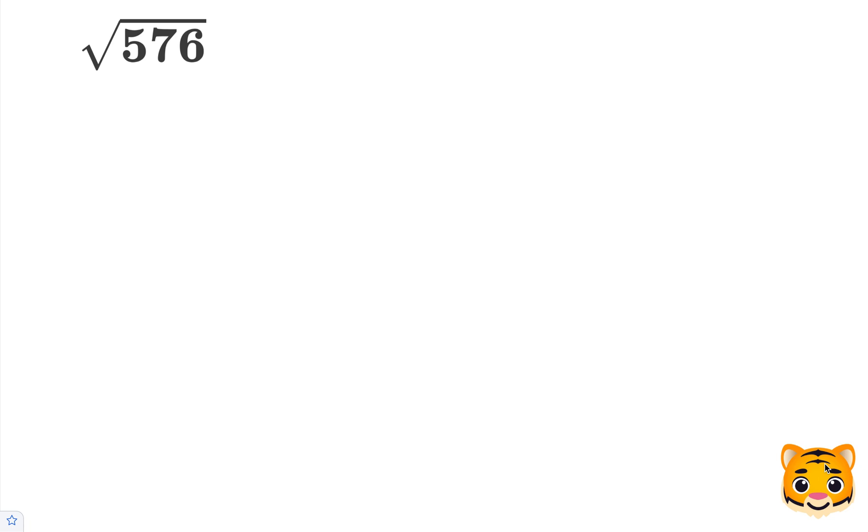In this example, we'll be simplifying the square root of 576. 576 is an example of a perfect square. A perfect square is a value that if you take the square root of it, you will obtain a whole number answer.